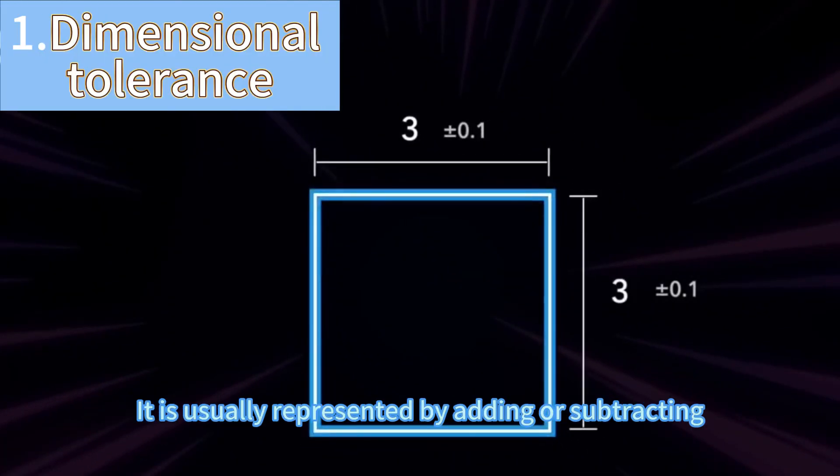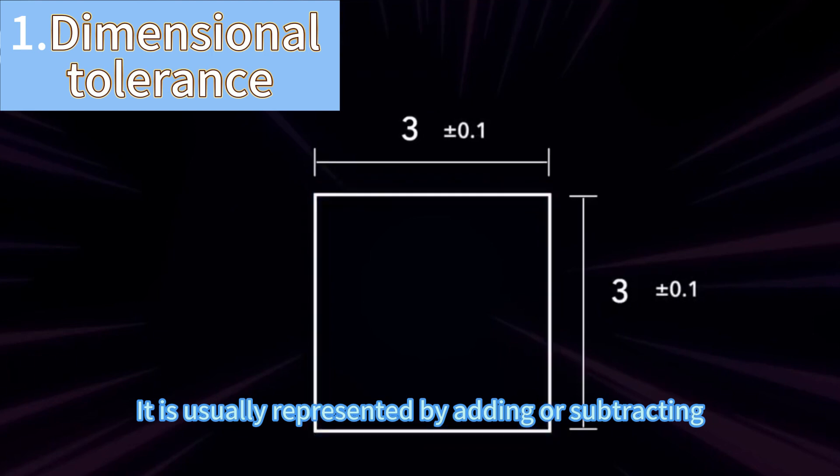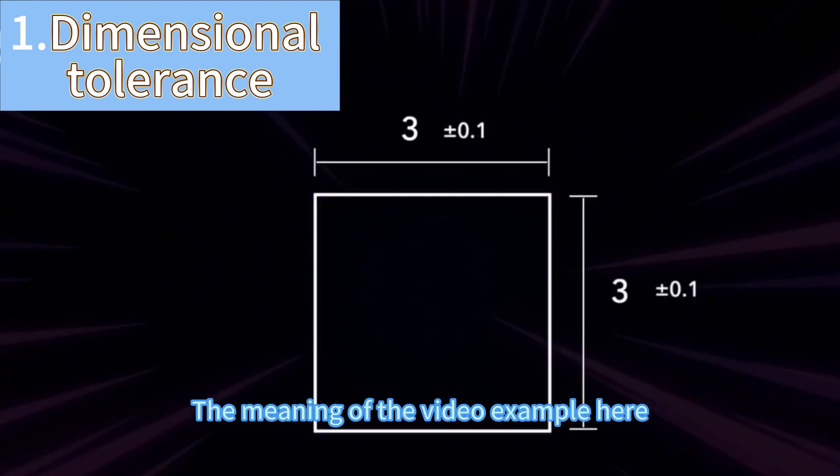Dimensional tolerance refers to the allowable error range of part or product size. It is usually represented by adding or subtracting. The meaning of the video example here is based on the previous numbers, the error cannot exceed 0.1.